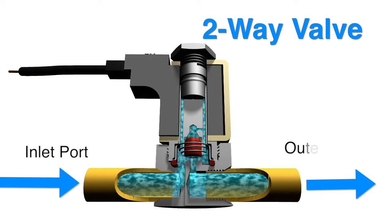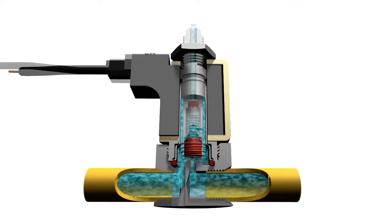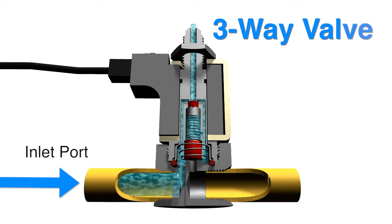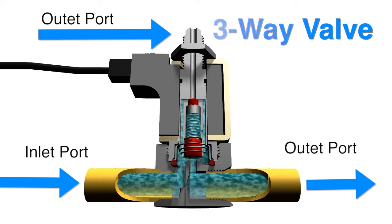Two-way valves have an inlet and outlet port and a single orifice, while three-way valves feature three port connections and two valve orifices to control flow.